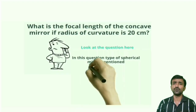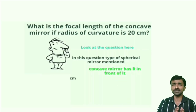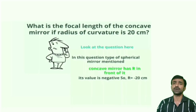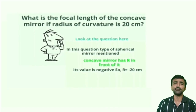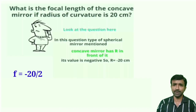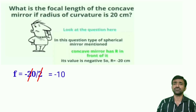According to sign convention, a concave mirror has its radius of curvature in front of the mirror. Any quantity measured in front of the mirror is given a negative sign. So R equal to minus 20 centimeters. Substituting into F equal to R by 2 gives F equal to minus 20 by 2, which equals minus 10 centimeters. The focal length of the concave mirror is minus 10 centimeters, where the minus sign indicates it is concave.